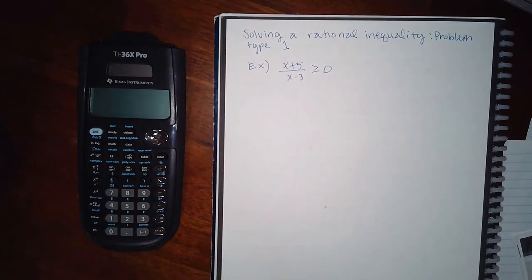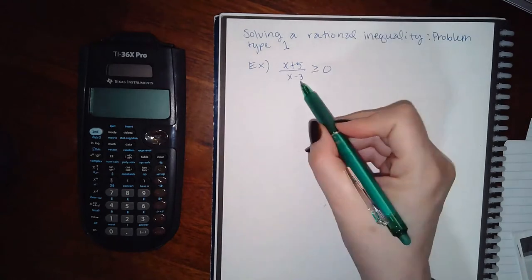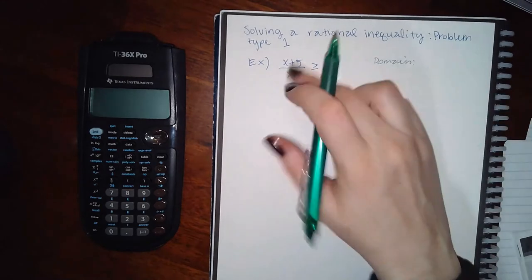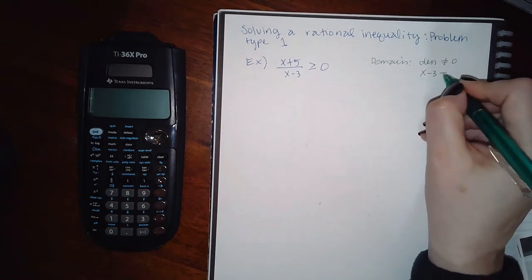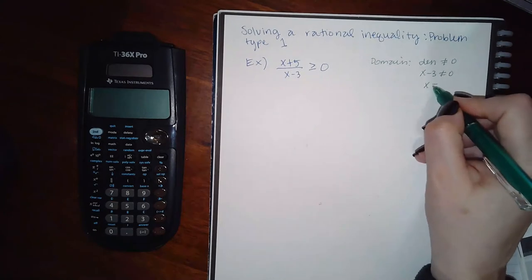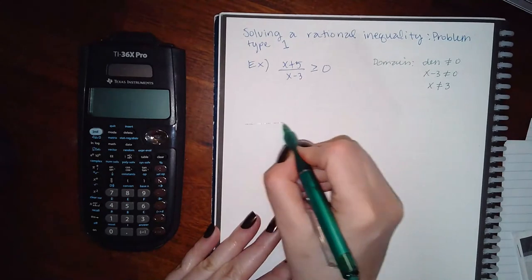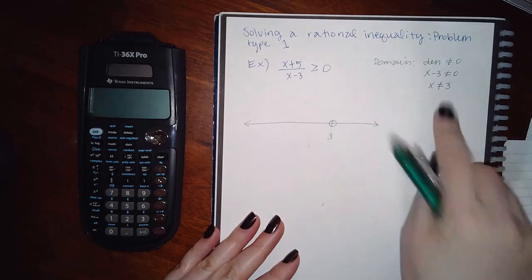Now we move on to the last two concepts in this module, which have to do with rational inequalities. You do the same as with polynomials. The only thing different is that you have to consider your domain. For the domain of a fraction, the denominator cannot equal 0. So x minus 3 cannot equal 0, which means x cannot equal 3, and wherever 3 is on the number line you're going to have a hole there.